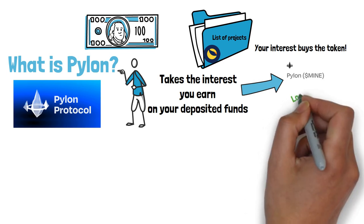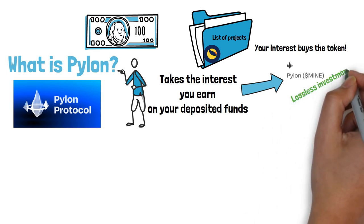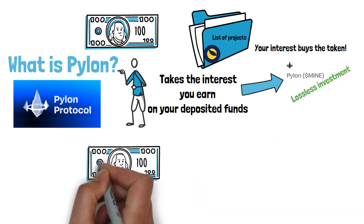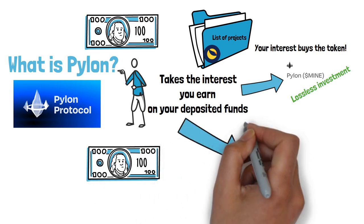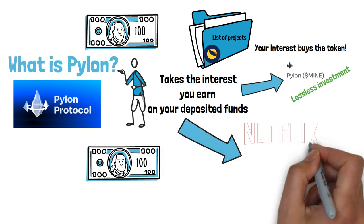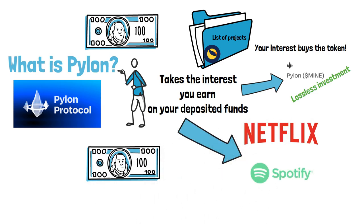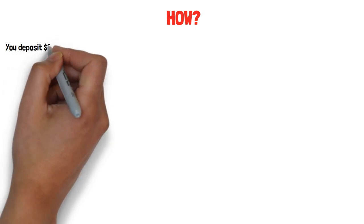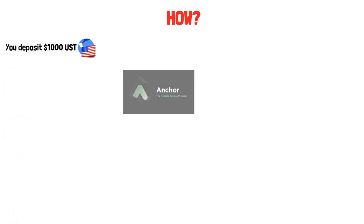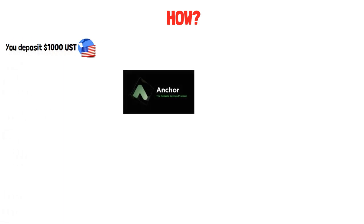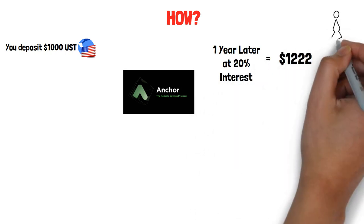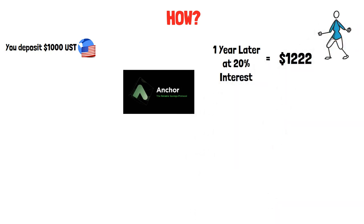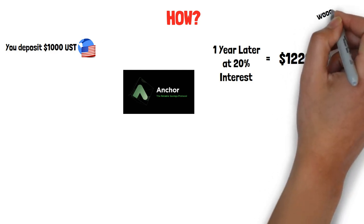Think of it as making a lossless investment, or having the interest pay for some of your subscription services, like Netflix. Say you deposit 1,000 UST into Anchor — over the year you earn 20% interest, and at the end of the year you have around $1,222.